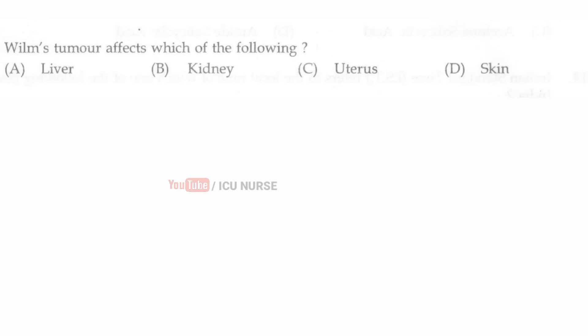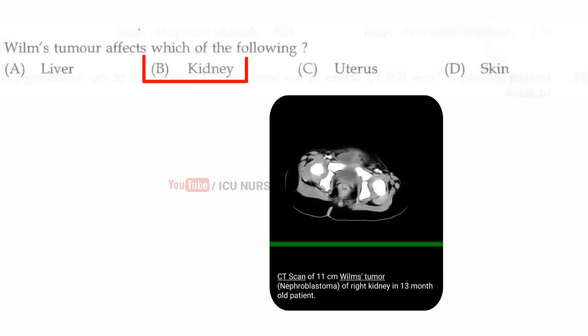Wilms tumor affects which of the following? The correct answer is B, kidney.